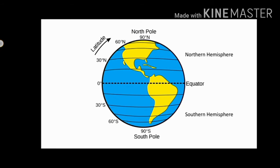The other latitudes are numbered from zero degree to 90 degrees in both hemispheres. The north pole is marked as 90 degrees north and south pole as 90 degrees south.